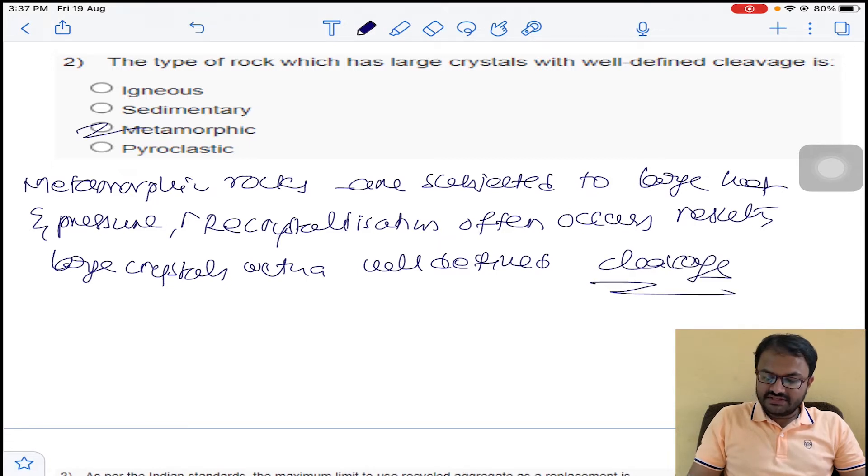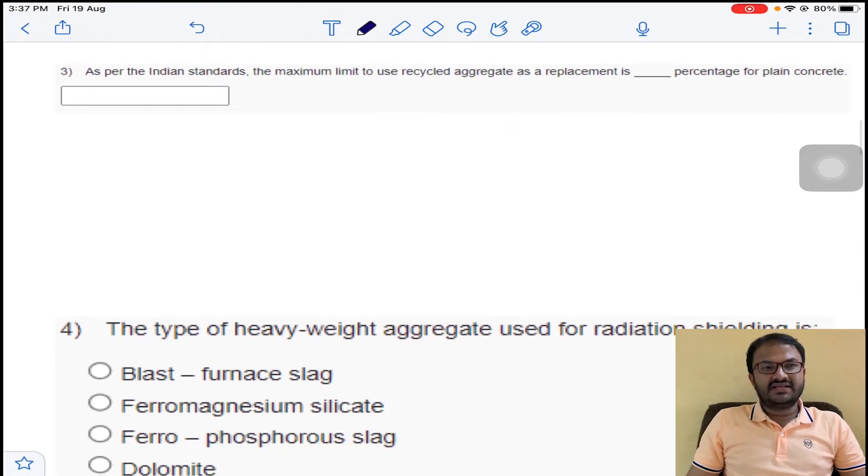So option C for question number 2. Coming to question number 3, it is a very direct question. As per Indian standard code, the maximum limit to use recycled aggregate as a replacement percentage of plain cement concrete.